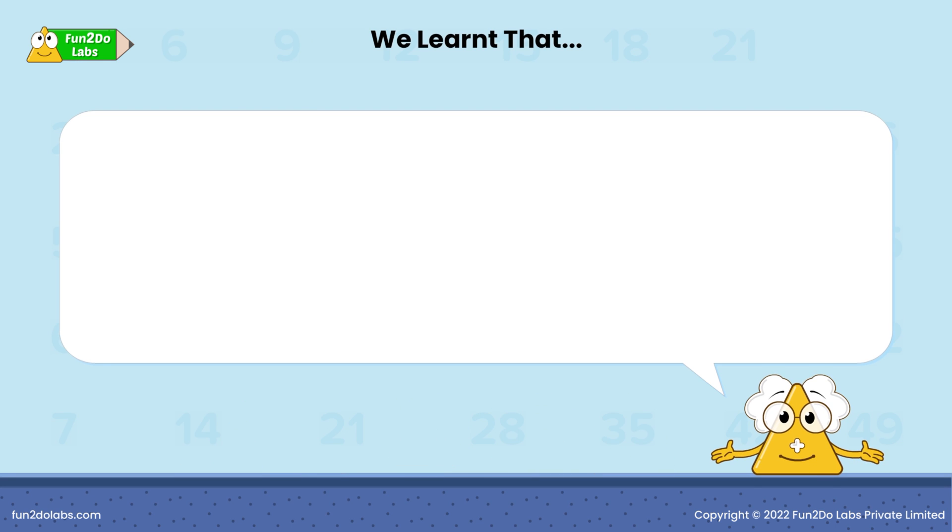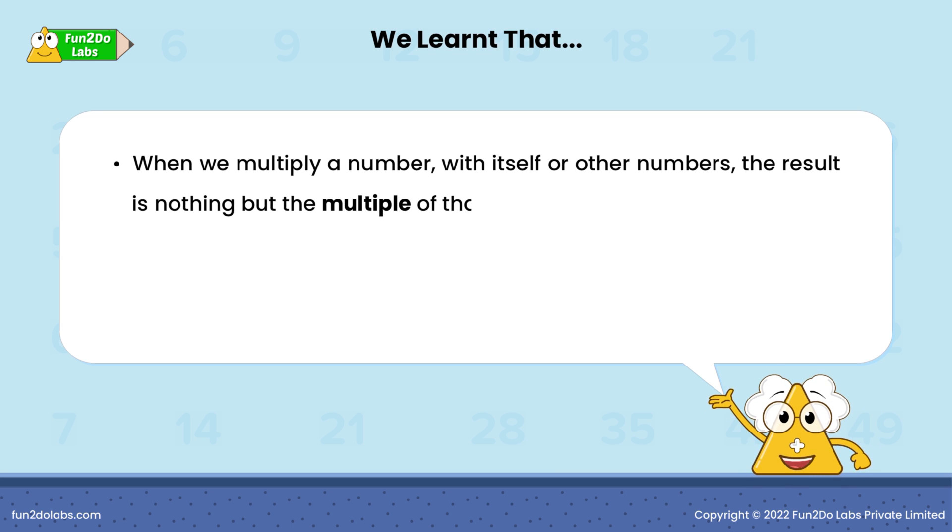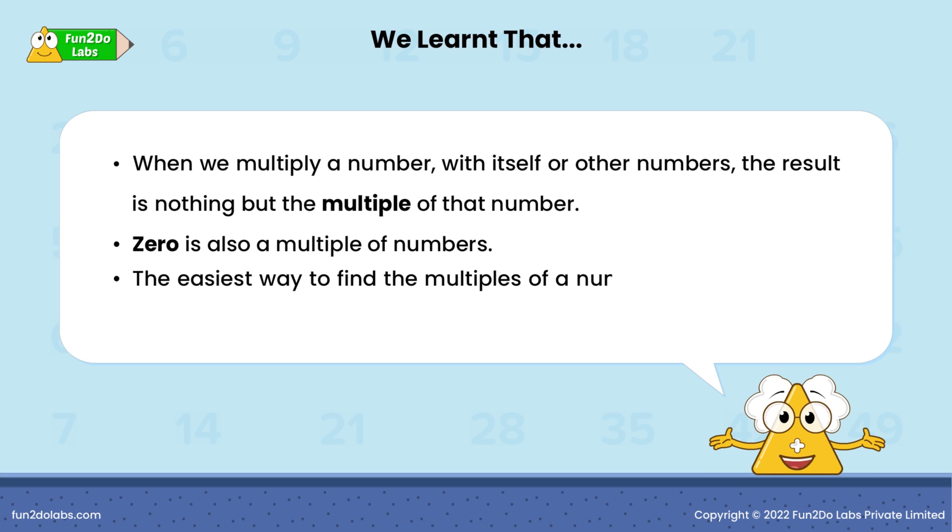Indeed! We learned that when we multiply a number with itself or other numbers, the result is nothing but the multiple of that number. Zero is also a multiple of numbers. The easiest way to find the multiples of a number is through multiplication tables.